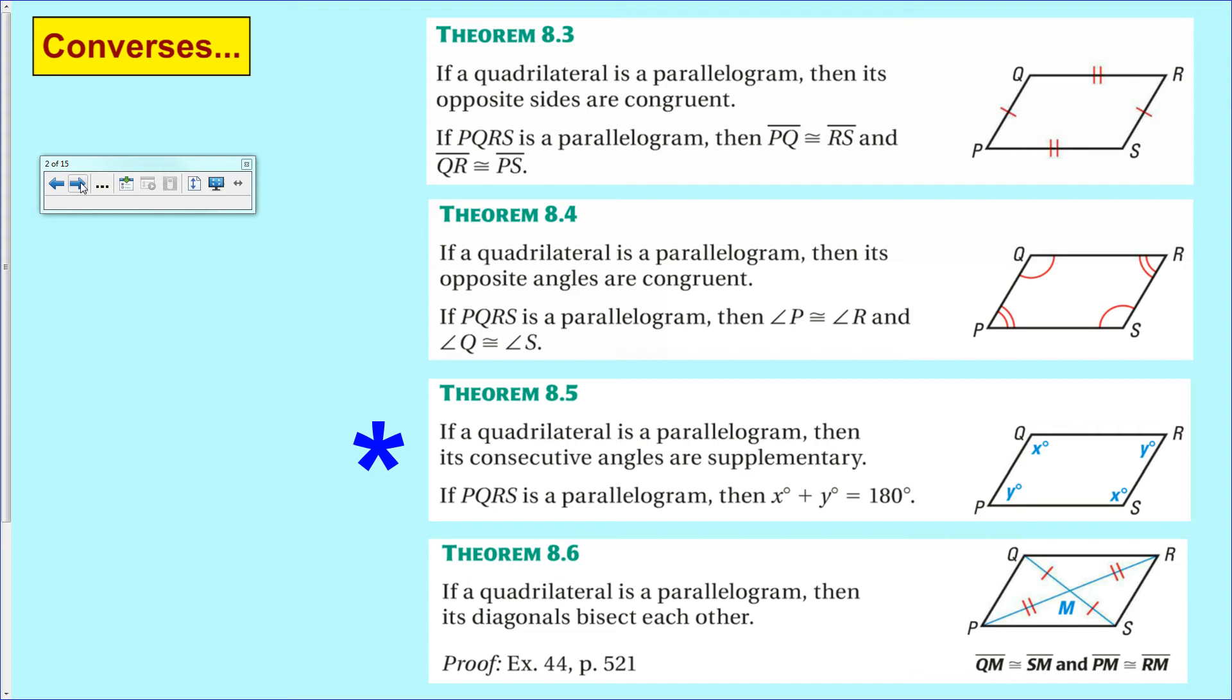Now each of those five things - these four things plus the definition of a parallelogram - work in both directions. So their converses are also true. And we're going to use all of these converses to prove or to show that a quadrilateral is a parallelogram.